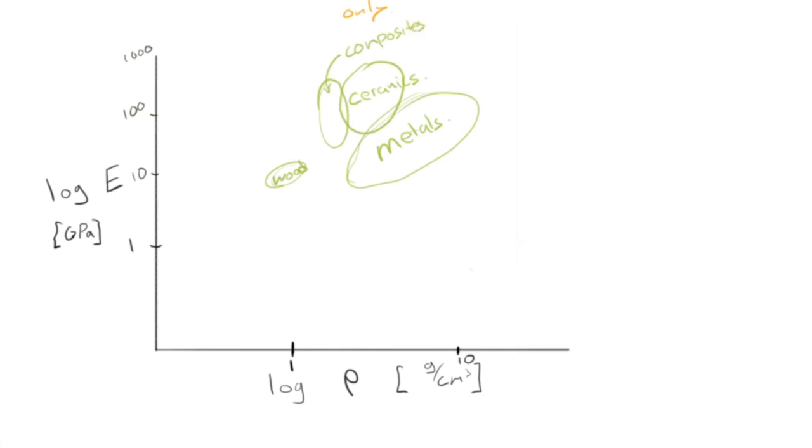What else might you have? Well, close to one gram per cubic centimeter. Again, things that roughly float on water, but lower strength, you might have some of the polymers. Well, you would, in fact.